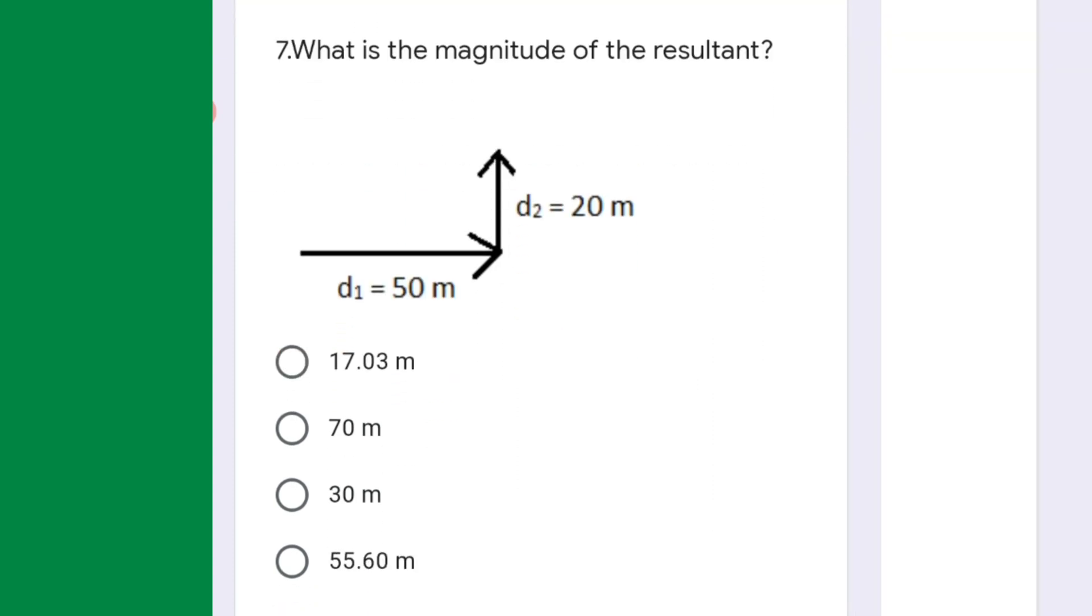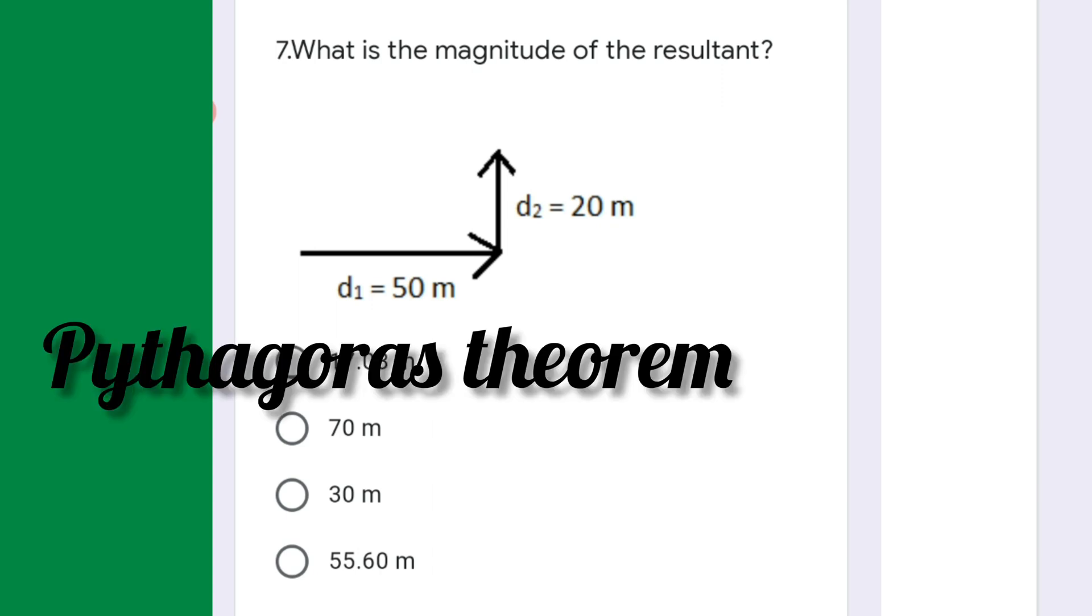Next question: what is the magnitude of the resultant given in the picture? If you can see, there are two displacements: one 50 meters and then 20 meters, and both the vectors are at 90 degrees to each other. So to find the resultant of this kind of vectors, we have to use Pythagorean theorem.